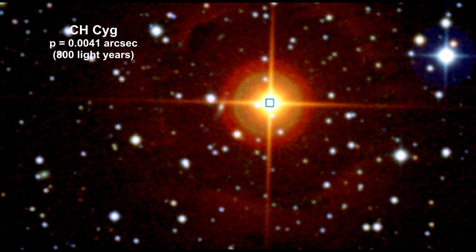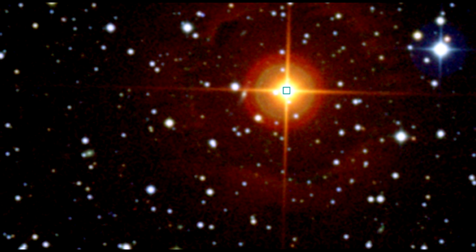Chcyg is a symbiotic star system in which a white dwarf feeds from the solar wind of a companion red giant star.